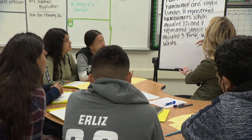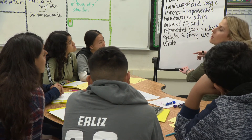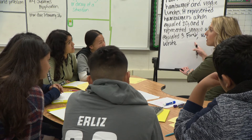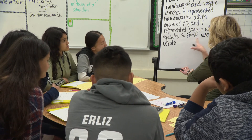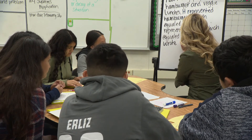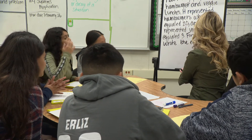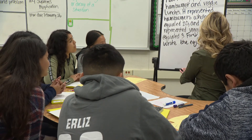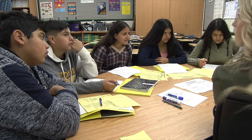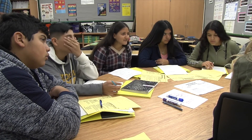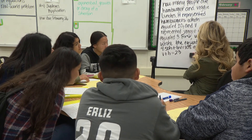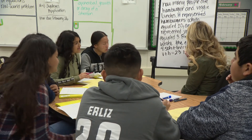We need a clear idea of what we were trying to find and state our solution. So far: 'We need to define how many people eat hamburgers and veggie lunches. H represented hamburgers which equals 20, and V represented veggie which equals 3.' Now — what kind of word is 'first'? It's a language feature — a transitional or sequential connective. First, we wrote the equations as a system. You guys notice the types of words you're using — wrote, needed — what tense is that? Past tense.